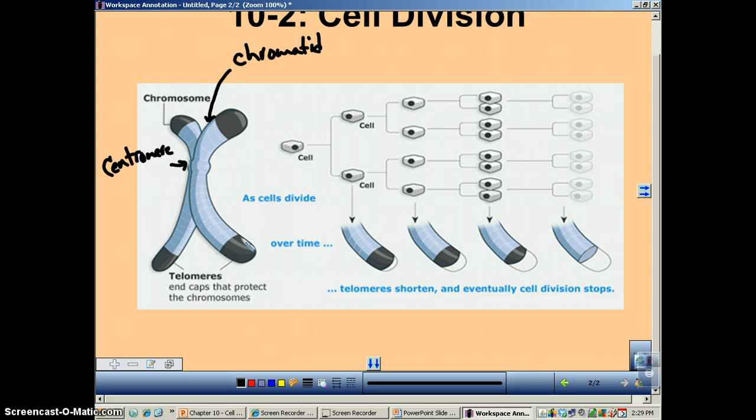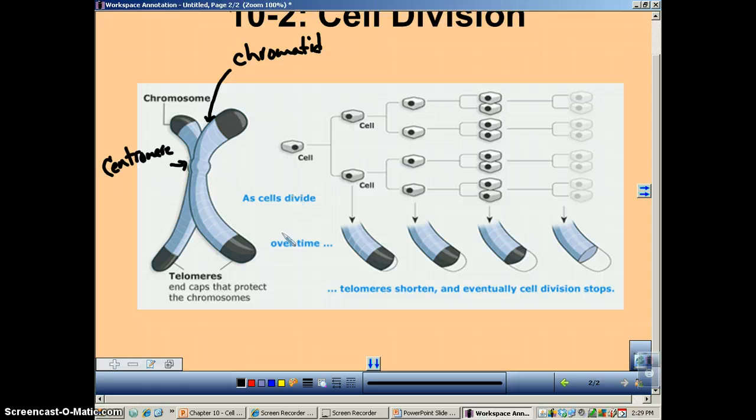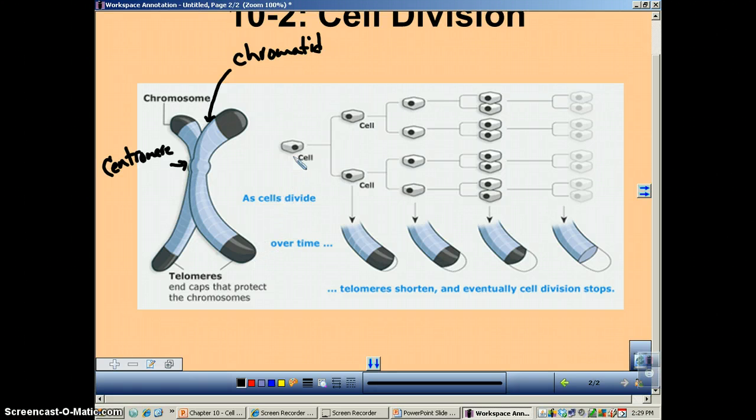So these telomeres are the caps of DNA that will keep it from unraveling. Remember, that's essentially an aglet. So here we go. We've got cell division number one. You've got one daughter cell, two daughter cells, and you'll notice that the telomere got a little bit shorter.